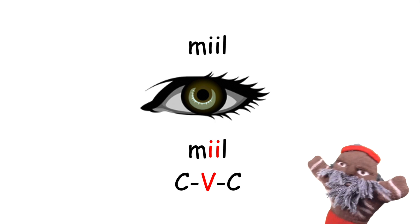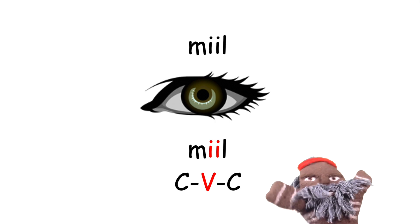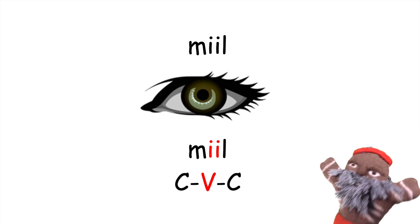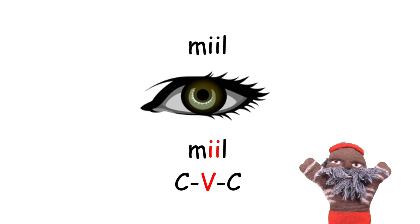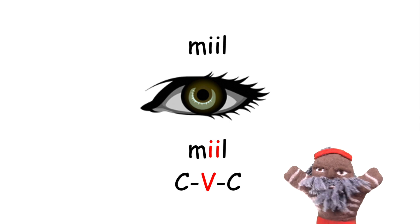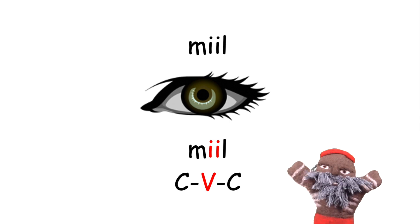The word 'Meal', for example, has one syllable — a consonant, a vowel and a consonant.